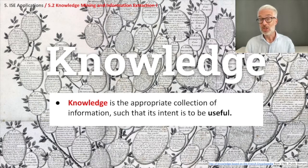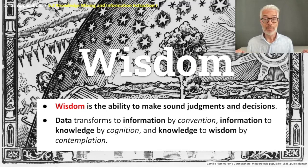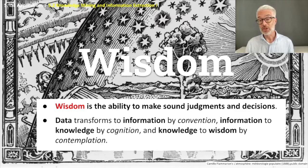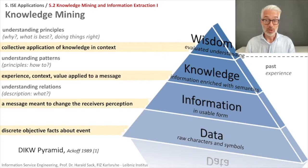There is even one thing beyond knowledge: we want to know knowledge patterns, understand principles to be able to make predictions about the future. This is referred to as wisdom. Wisdom is the ability to make sound judgments and decisions. So: data transforms to information by convention, information to knowledge by cognition, and knowledge to wisdom by contemplation. This is the continuum of understanding.